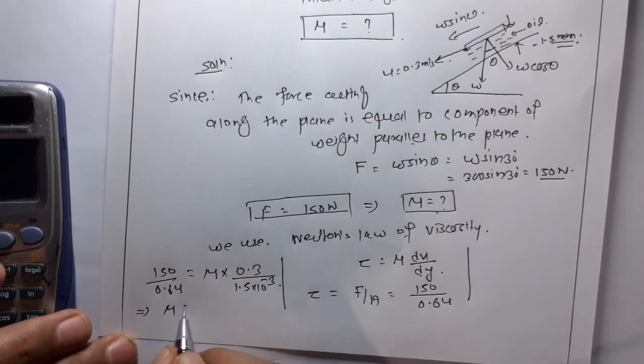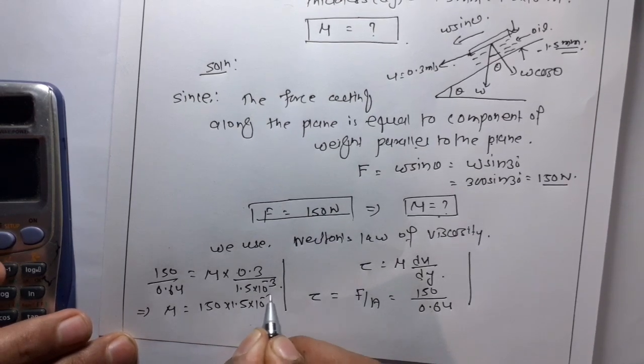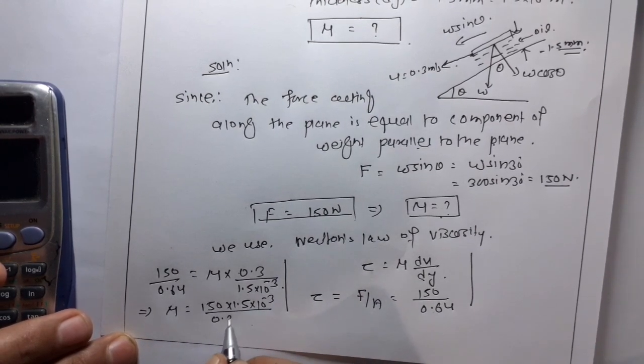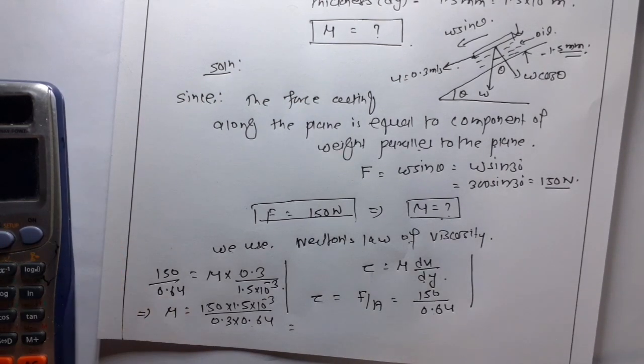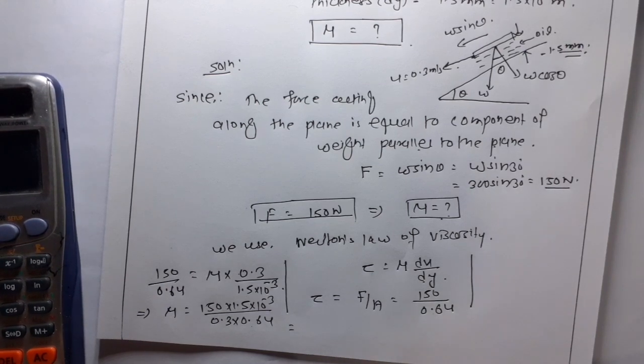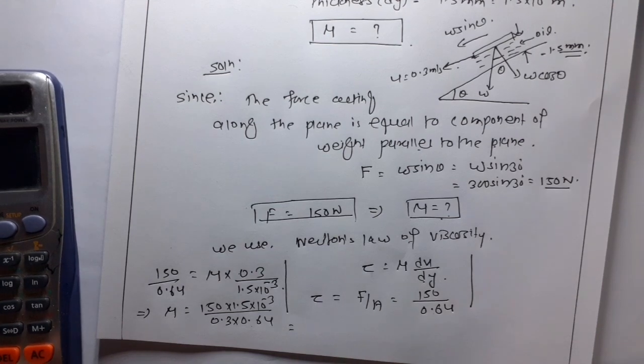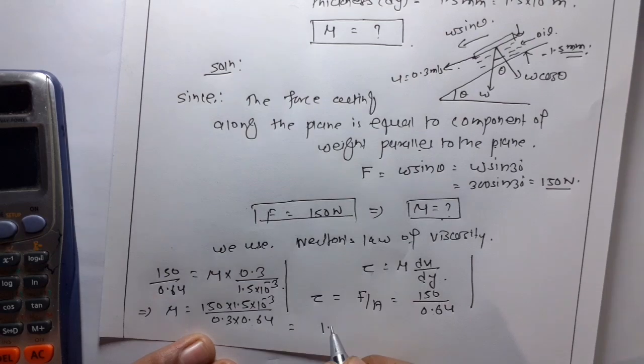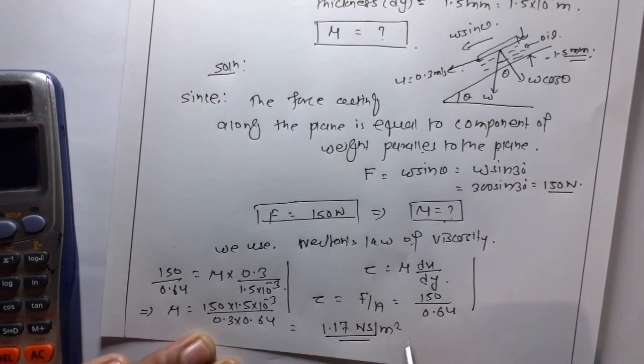So, this implies mu is equal to 150 into 1.5 into 10 to the power minus 3 upon 0.3 into 0.64. So, this is 1.17 Newton second per meter square.